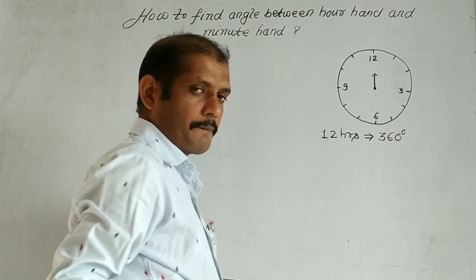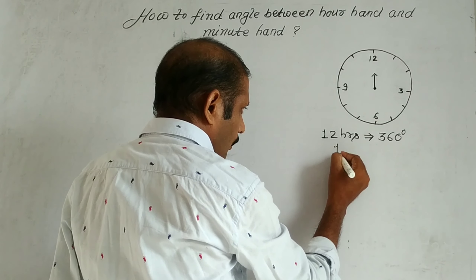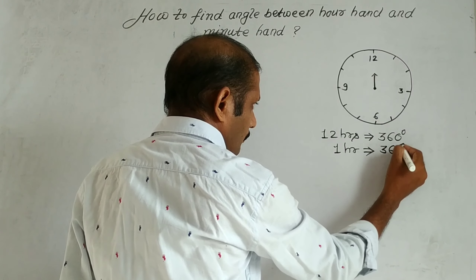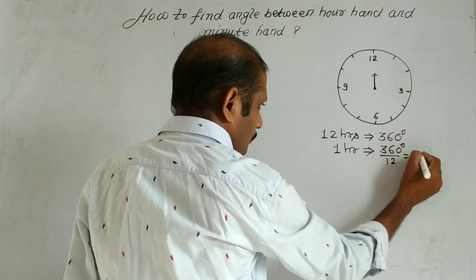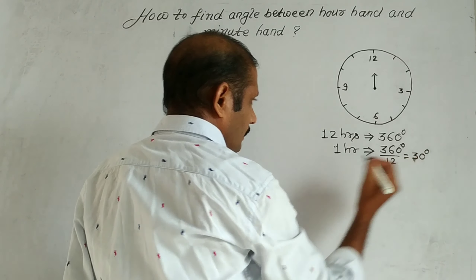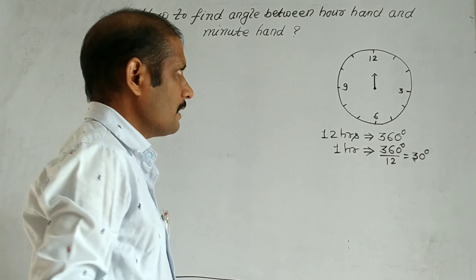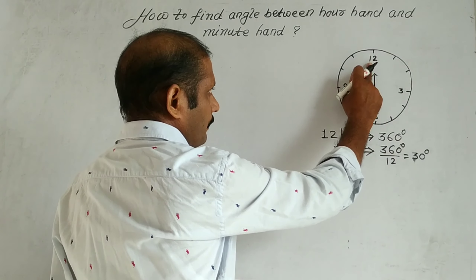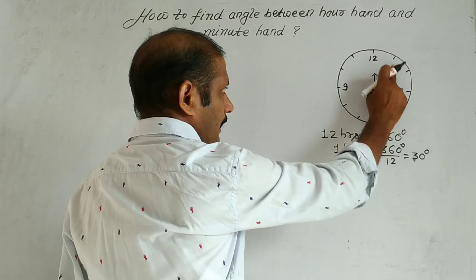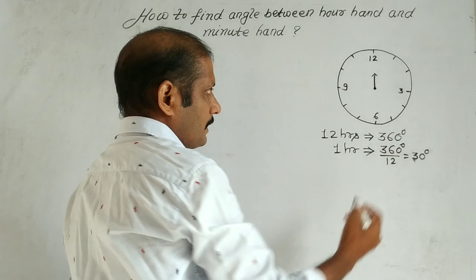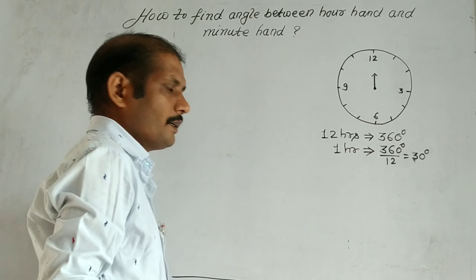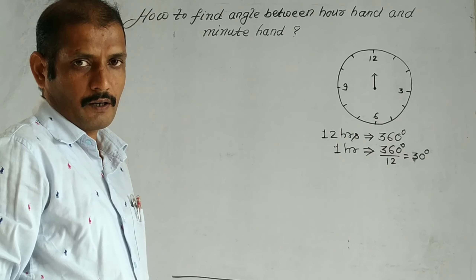So in 12 hours, 360 degrees. In 1 hour, we calculate: our hour hand covers 360 degrees divided by 12, that is equal to 30 degrees. So 30 degrees of rotation happens in 1 hour. It means from 12 to 1 is 30 degrees, from 1 to 2 is 30 degrees — every adjacent number on the clock, when the hour hand rotates, it covers a 30-degree angle.